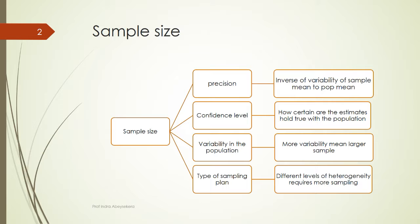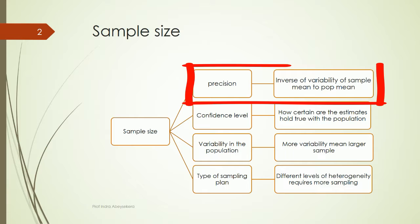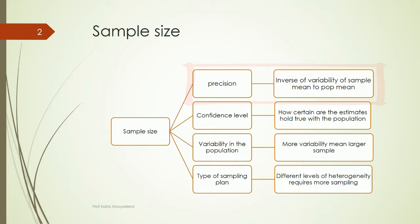What we mean by precision is the variability of the sample mean compared to the population mean. We want to decrease the variability or the sampling error so that the precision in relation to the population increases.